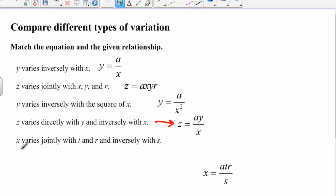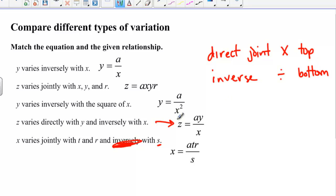And then the last one is x varies jointly with t and r and inversely with s. We see this inversely with s. That means s is going to go on the bottom. If we see something that has both direct jointly, inverse direct and joint variation means to multiply, and that's going to go on top. And if we see inverse variation, that means to divide, and that's going to go on the bottom. So whatever is varying inversely, that should go on the bottom. Just like here where it says inversely with the square of x. There's the square of x and it's on the bottom.